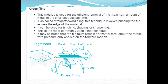The file must remain horizontal throughout the stroke, with pressure only applied during the forward stroke. We should perform a forward direction motion. Cross filing is the most efficient method for removing the maximum amount of material. We use forward pressure. Most commonly used filing technique is cross filing.